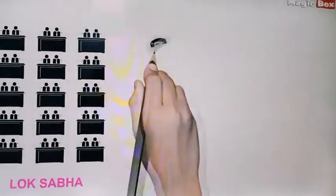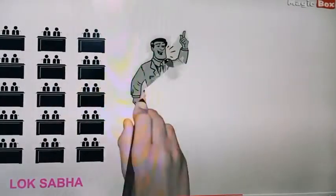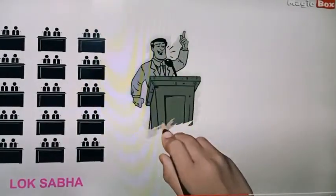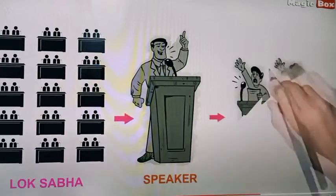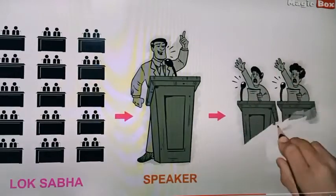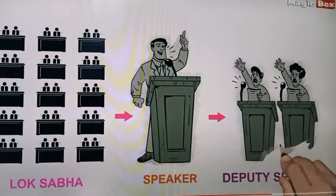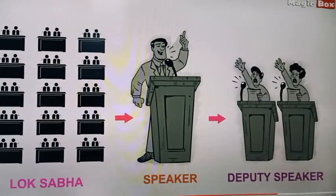The Lok Sabha elects one of its own members as its presiding officer, and he is called the Speaker, who is assisted by the Deputy Speaker, who is also elected by the Lok Sabha.